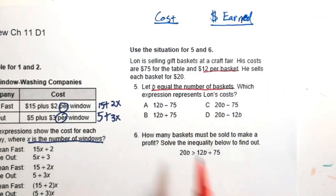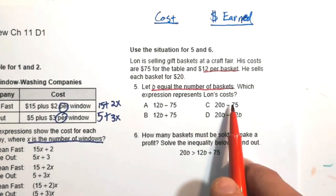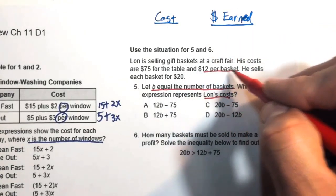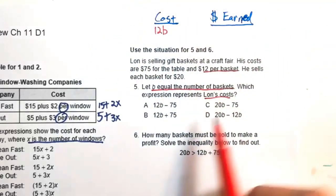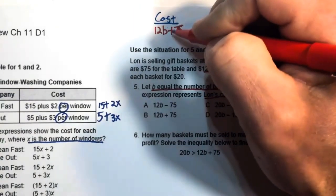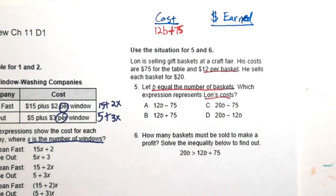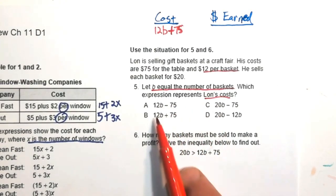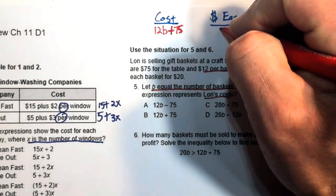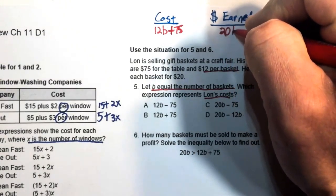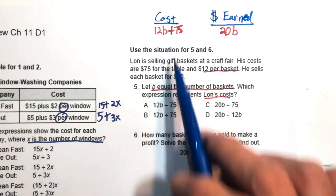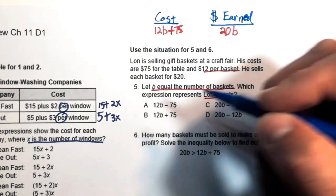The question for number five asks for an expression for Lon's cost. He spends $12 per basket, so that's 12b, plus a one-time $75 table cost, giving 12b plus 75. His amount earned is $20 per basket, so 20 times b, or 20b. The answer for number five is B.